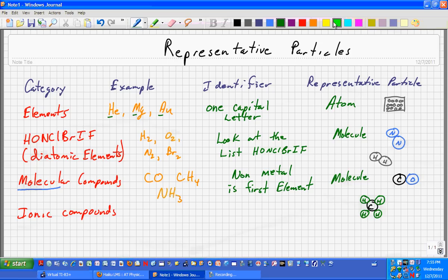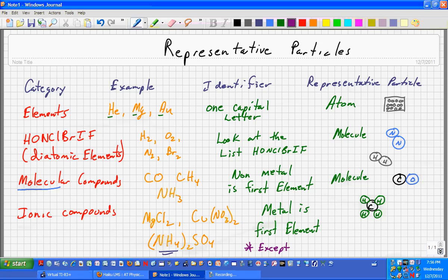Ionic compounds would be stuff like magnesium chloride, copper nitrate. The trickiest one would be something with ammonium ion in it, something like ammonium sulfate, because that's going to look a little bit like a molecular compound because nitrogen is a nonmetal. But you got to remember ammonium is still an ion. So the identifier here is a metal first, except ammonium ion.